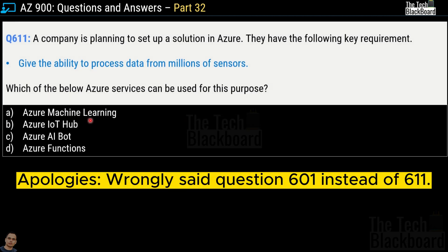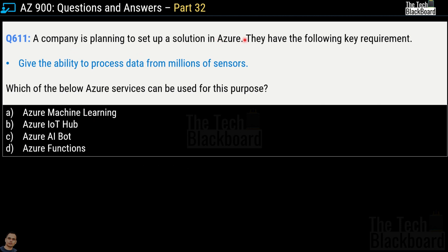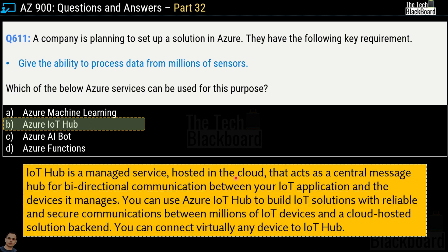Question 611: a company needs to process data from millions of sensors. The options are Azure Machine Learning, Azure IoT Hub, Azure AI Bot, and Azure Functions. The correct answer is option B, Azure IoT Hub. Azure IoT Hub is a managed service hosted in the cloud that acts as a central message hub for bi-directional communication between your IoT application and devices, supporting billions of IoT devices connected to a cloud-hosted solution back-end.